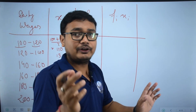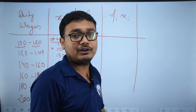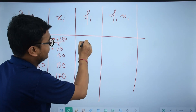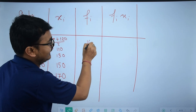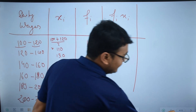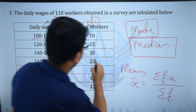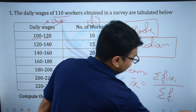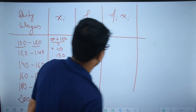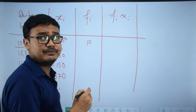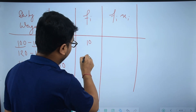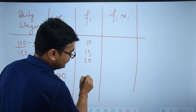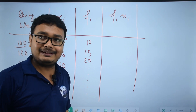The fi (frequency) values from the table are: 10, 15, 20, 22, 18, 12, and 13. These are the number of workers in each class interval.